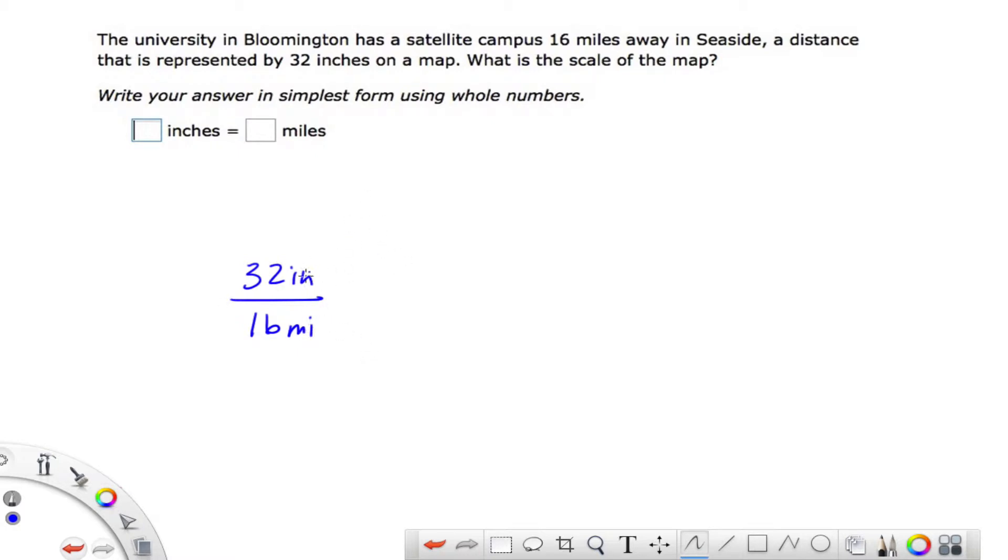Now I can ignore the units, the inches to miles, and this is really just 32 over 16. So I have to just reduce this fraction. Now there's a couple ways I can look at this. I happen to know that 16 times 2 is 32. 16 times 1. So I know that 16 is the greatest common factor. And this would be 2 inches, because that's on top, to 1 mile on the bottom. That's one way to do it.